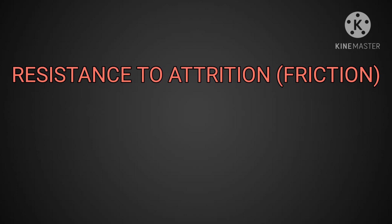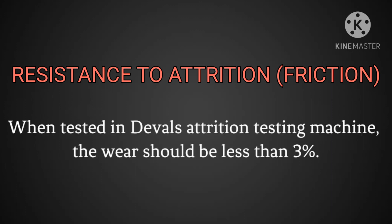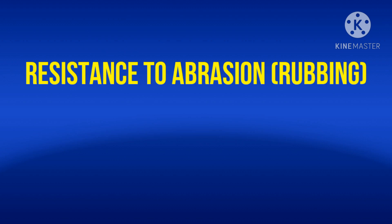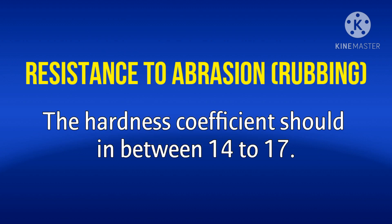Resistance to attrition. When tested in Deval's attrition testing machine, the weight loss should be less than 3%. Resistance to abrasion. The hardness coefficient should be between 14 and 17. Weathering. Stones in structures are continuously exposed to atmospheric agencies such as wind, rain, frost, and sun. These agencies cause disintegration and decay in the stone, and this action is called weathering.